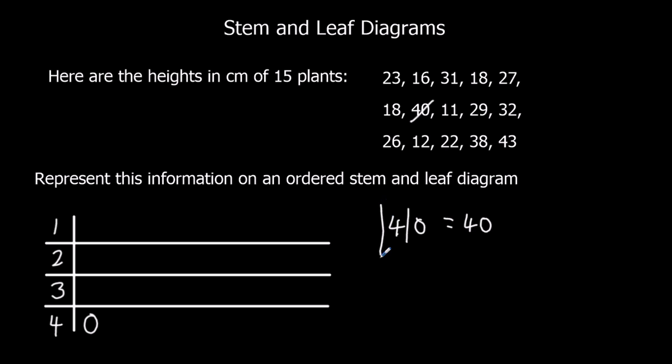This is a key which you've got to write. So 4, 0 means 40, and it means 40 centimeters. When you do a stem and leaf, you need to write a key. So 4, 0 equals 40 centimeters - there's the key.